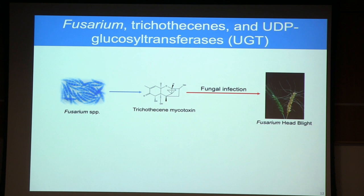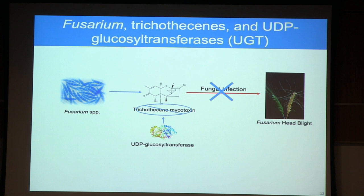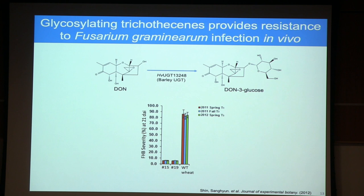If we want to inactivate trichothecines, one way is glycosylation at this position using a UDP glucosyltransferase, where a glucose moiety is transferred from UDP glucose onto the trichothecine mycotoxin. If you express an enzyme capable of this reaction in wheat, hypothetically you get a wheat crop resistant to the spread of Fusarium infection. In 2012, a group did exactly this — they expressed a UGT from barley capable of glycosylating the trichothecine DON at this position.